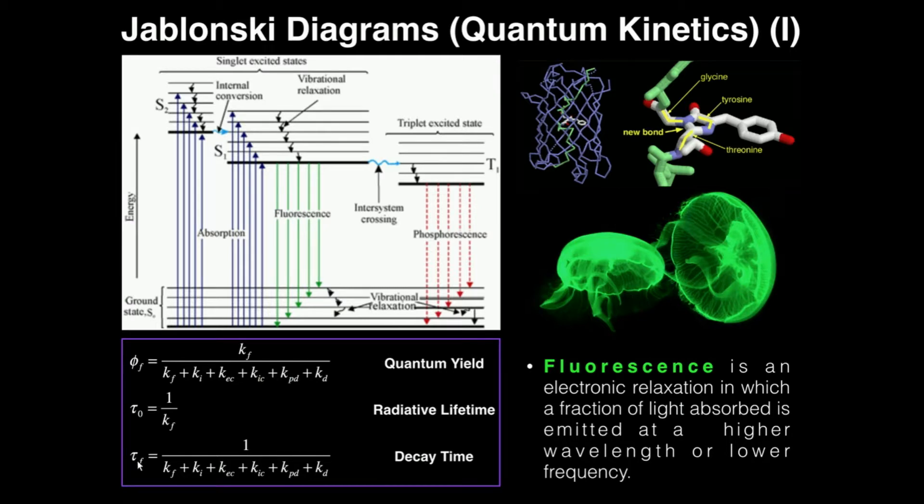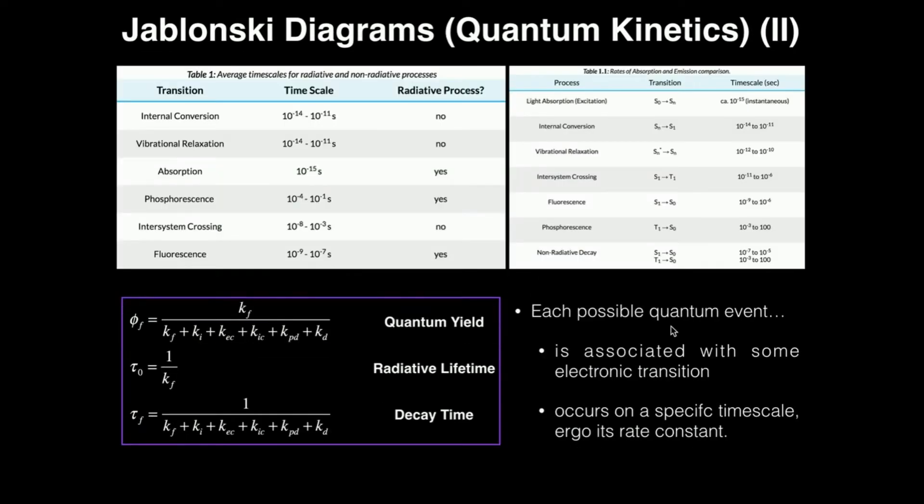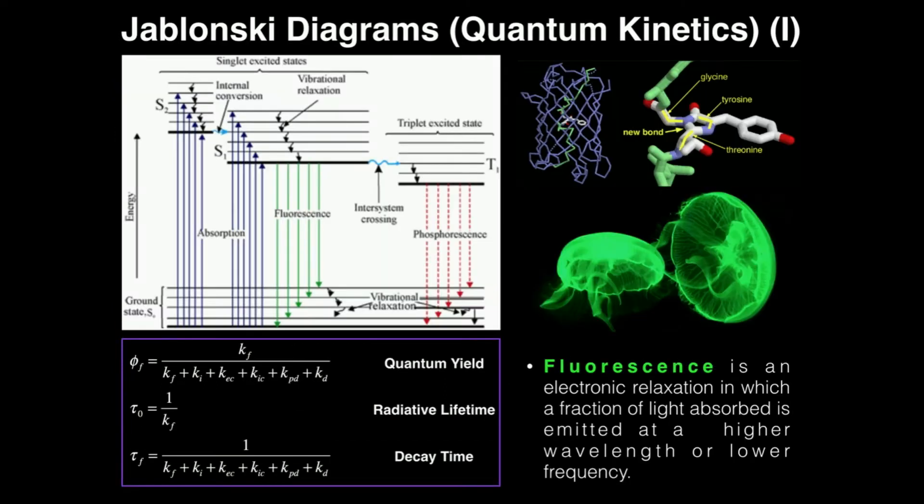Then we have the decay time, denoted by tau sub-f. The decay time, basically what that is, is if you got an electron up here to this state right here where you could have fluorescence, basically assuming there's no fluorescence, how long would it take for that electron just to decay back down? That's all it's saying. Each of these quantum events, so if it's internal conversion, relaxation, absorption, phosphorescence, whatever...